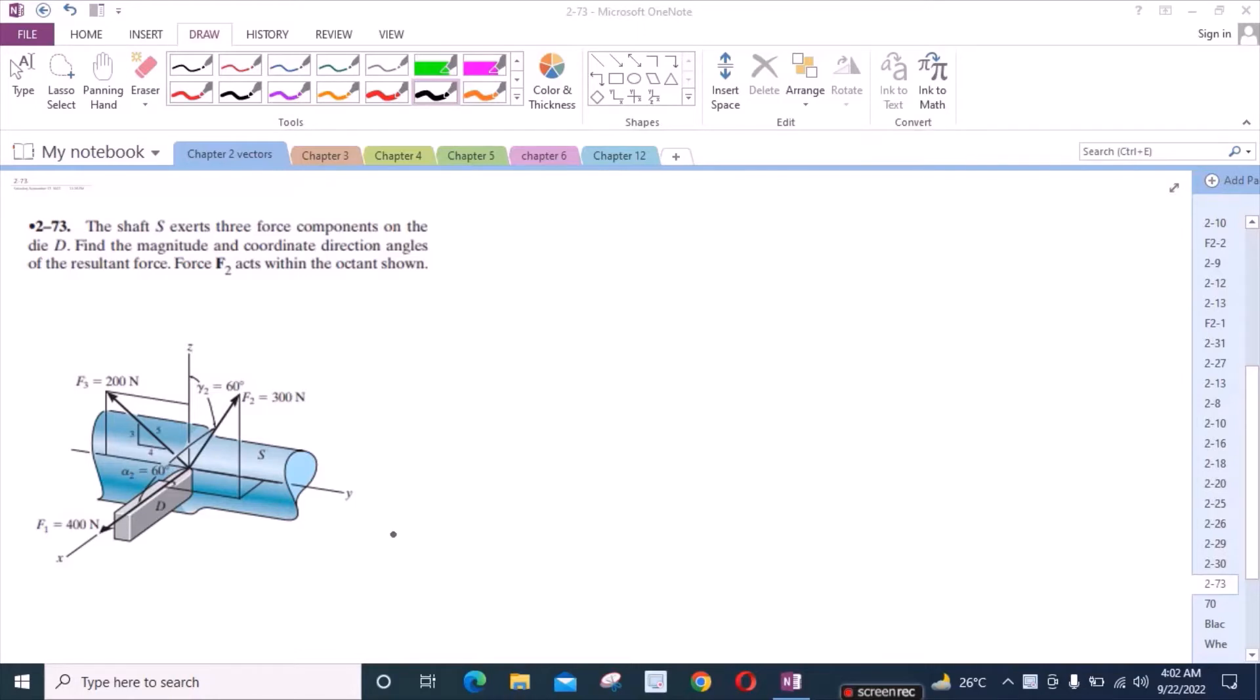To solve this problem, first of all, we have to express all the forces in the Cartesian vector form. So for F1 force, F1 has only one component along the positive x-axis. So F1 is equal to 400i.